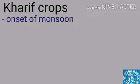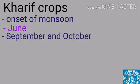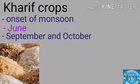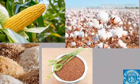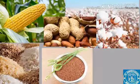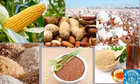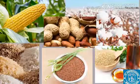The next one is Kharif crops. The Kharif season begins with the onset of the monsoon in different parts of India. Sowing of crops begins in June and harvest takes place in September to October. Some important Kharif crops are rice, maize, jowar, bajra, tur, cotton, jute, groundnut, and soya bean.